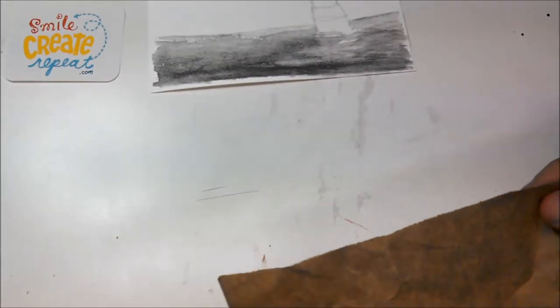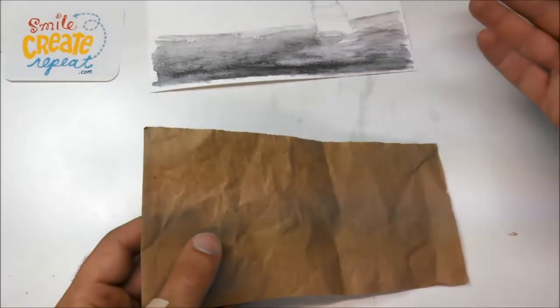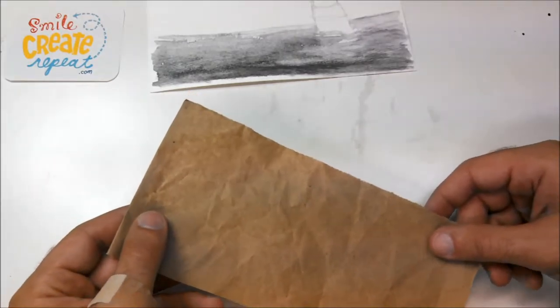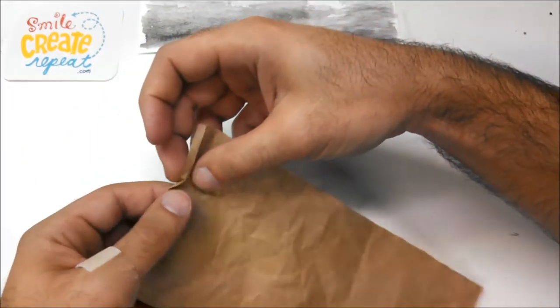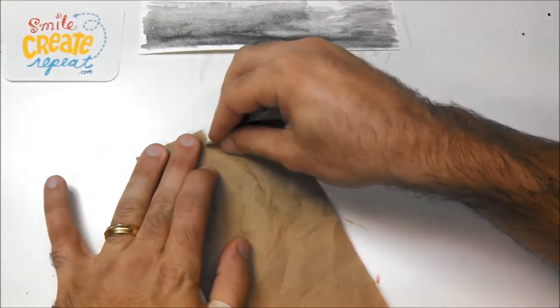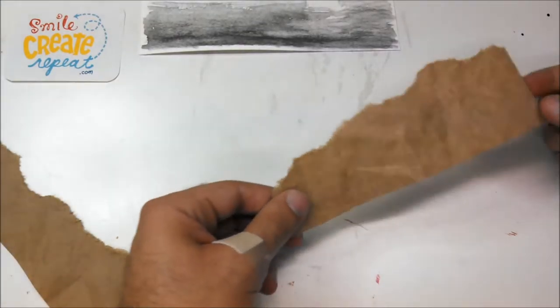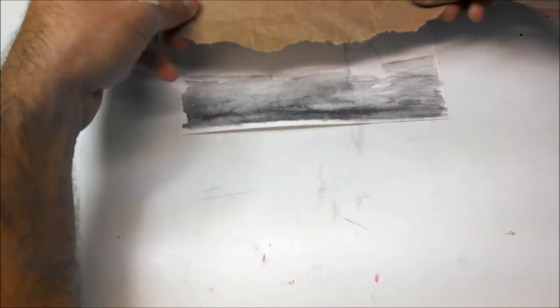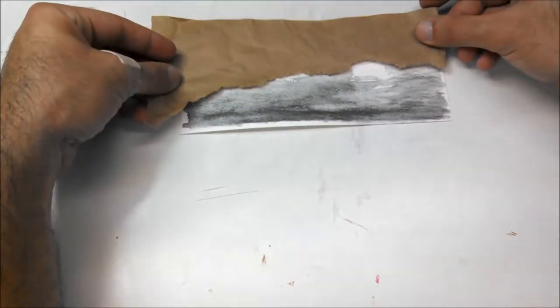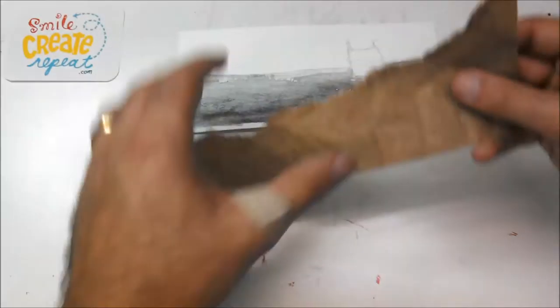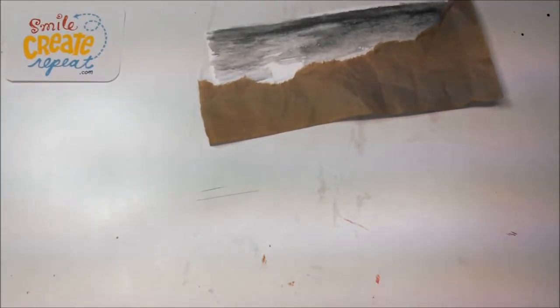So we have this tan paper, craft paper in here. I like using this because it's colored, it's brown. So when you put dark on it, you can see it, or with our white paint pen, we'll be able to use that. So what I'm going to do now is I'm going to rip it, and use this as the ground here that this little guy's standing on. So I'm going to try to rip it so it's kind of straight, but so there's some variety of texture.